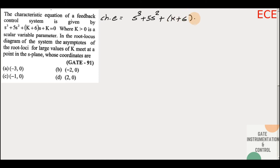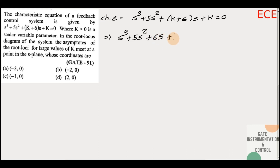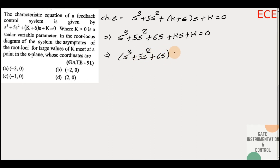Our characteristic equation is s³ + 5s² + (k+6)s + k = 0. We can rewrite this as s³ + 5s² + 6s + k(s + 1) = 0, taking k as common from the appropriate terms.